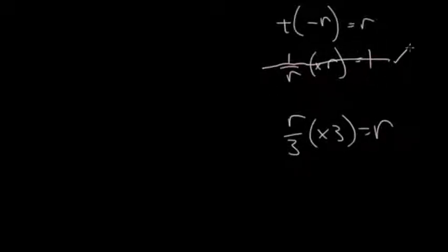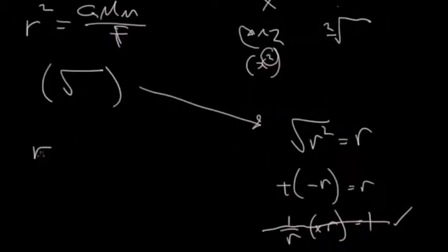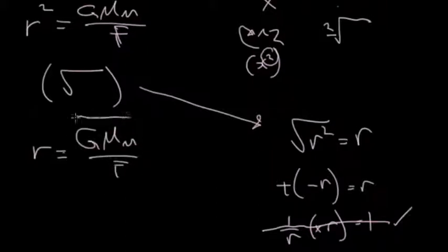So we just end up with R equals square root of GMm over F. And we took the square root of that side as well. So that's transposition.